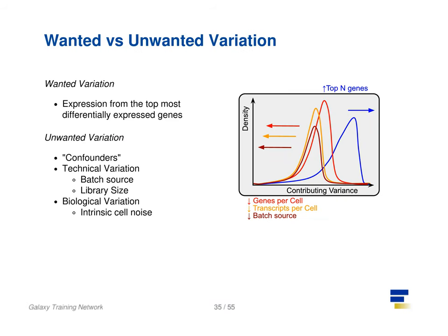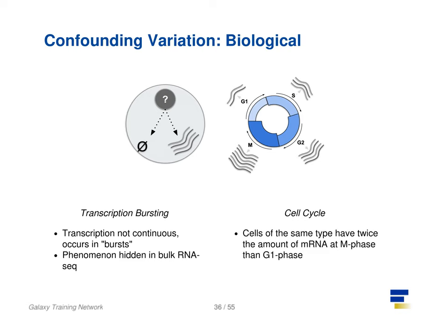Other factors that we need to take into account during a single cell RNA analysis are the unwanted factors that can confound the analysis. Ideally we wish to see the gene profiles that separate different types of cells driven by biological variance. There is however confounding variation from both technical and biological sources that are not useful to the analysis but do contribute to the variance. Confounding biological variance appears in two forms: transcriptional bursting and cell cycle variation.